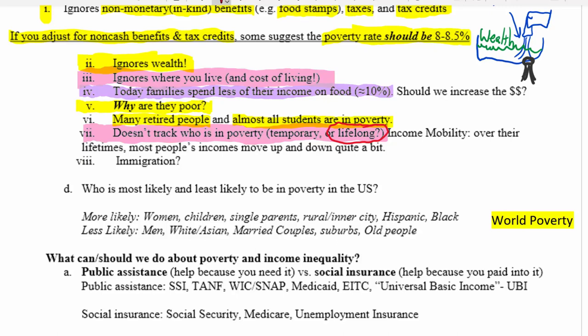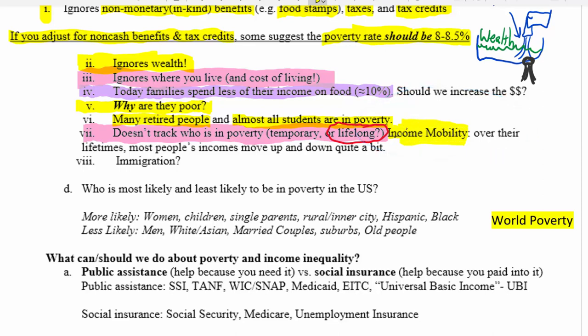This idea is called income mobility — over their lifetimes, most people in the United States move up and down from one income quintile to another. Even if you're born poor, most people who are born poor do not stay poor for their whole lives. Your income goes up as you enter your prime earning years in your 30s, 40s, and 50s, and then drops back down when you retire.